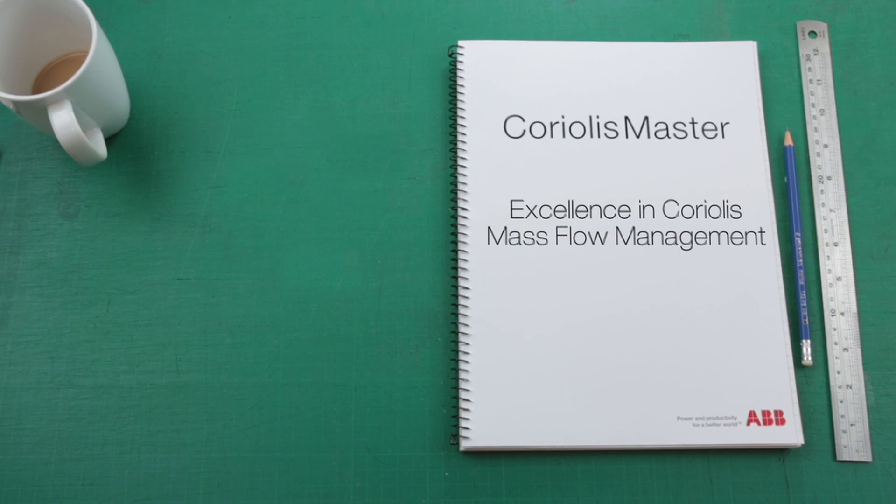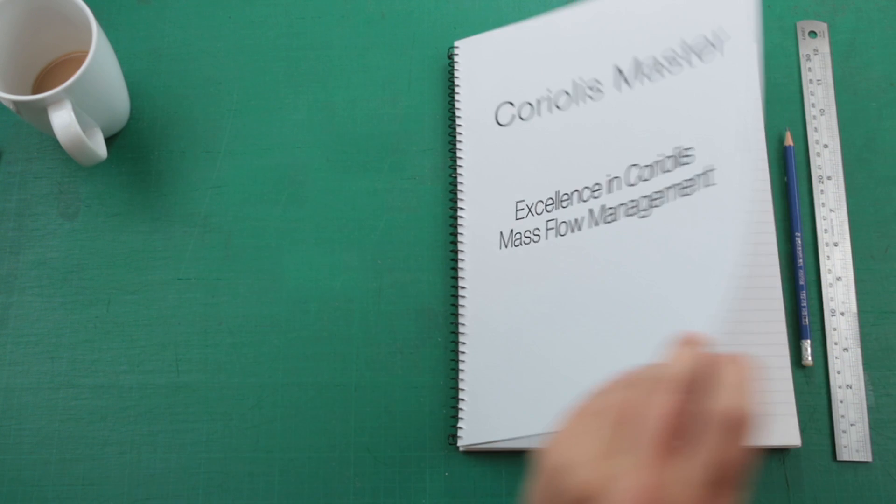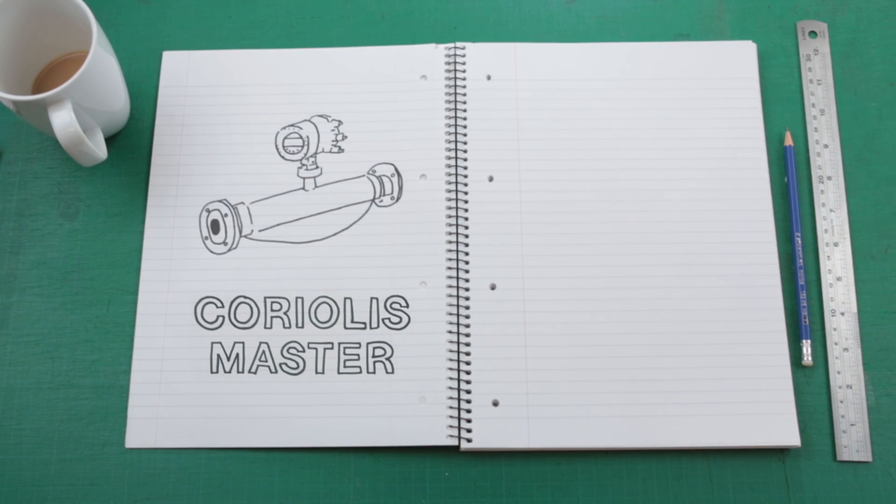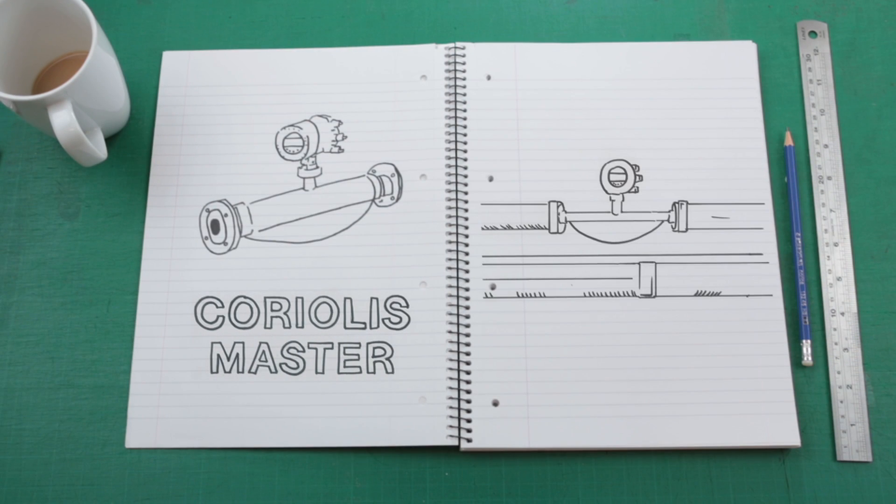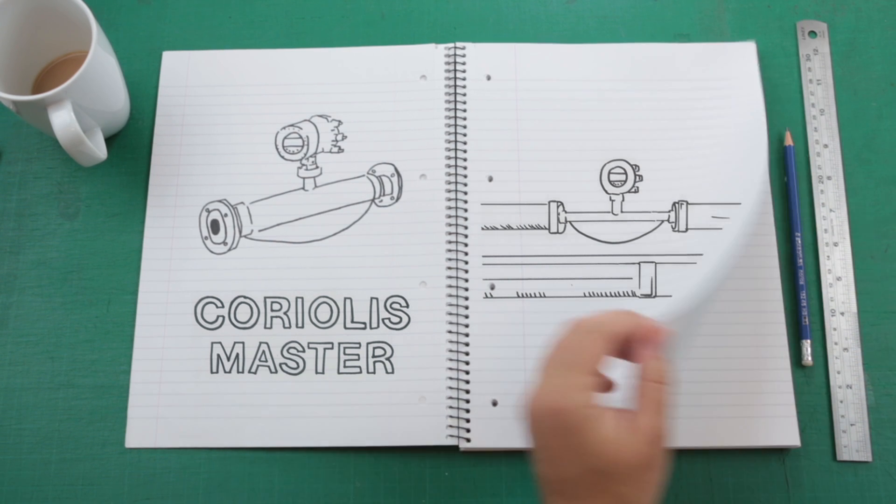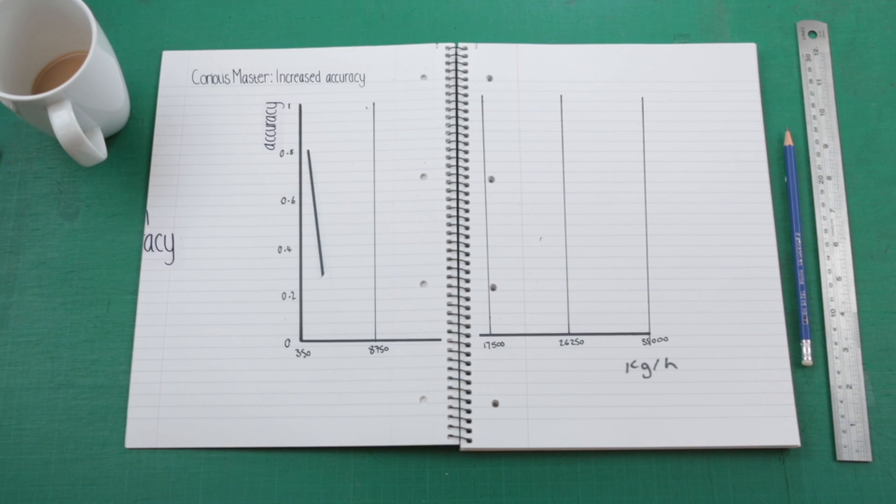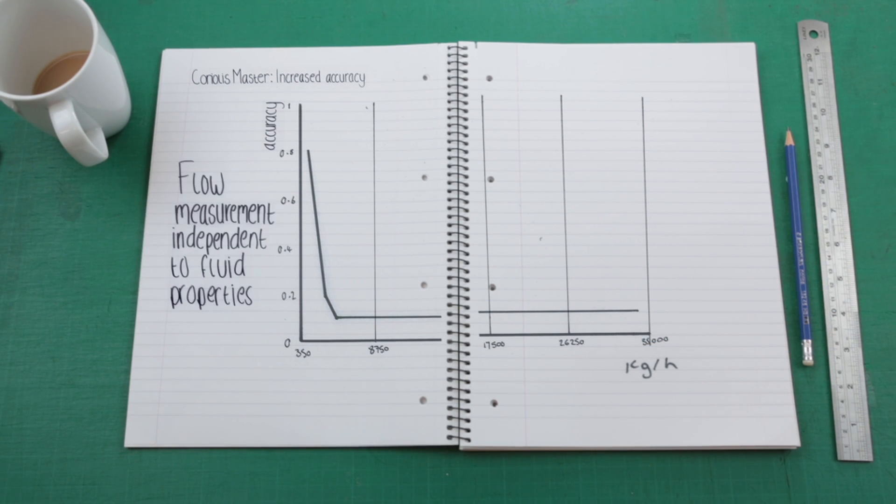Coriolis mass flow measurement is the most accurate form of flow measurement for a wide range of industrial processes. Coriolis master flow meters from ABB deliver some of the highest accuracy levels on the market, dealing with very high flow rates and staying accurate at low flows.